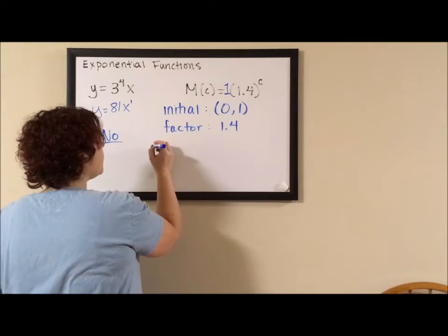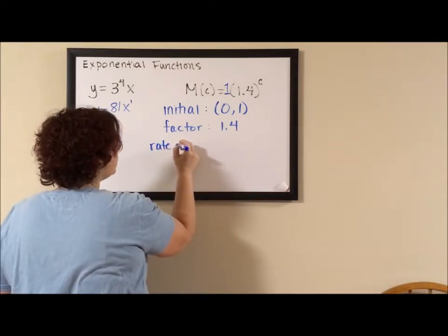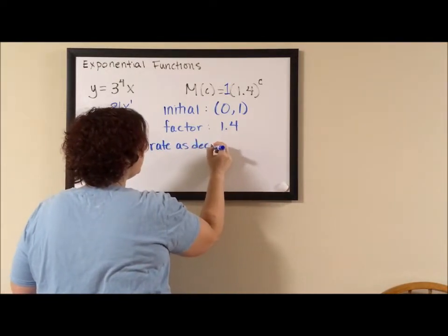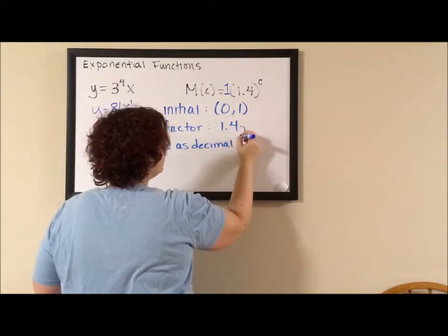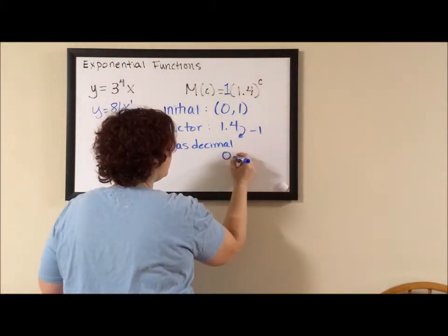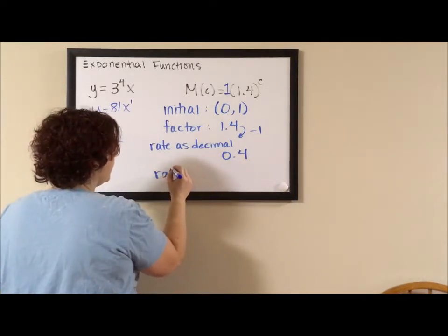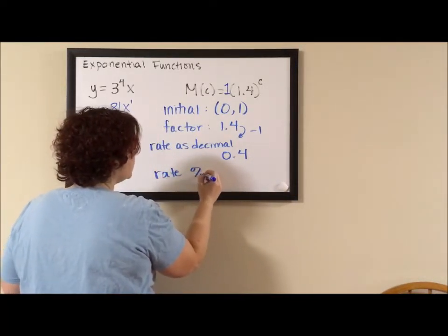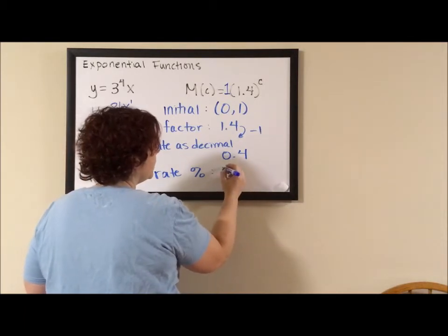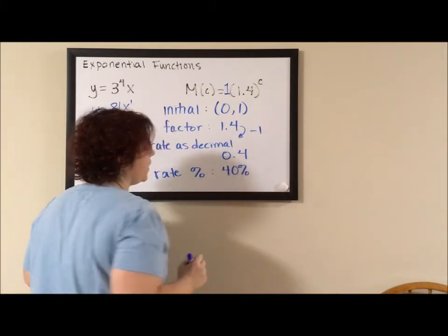So to get the rate as a decimal, we subtract 1. So this becomes 0.4. And then to get the rate as a percent, you multiply by 100. So this has a 40% growth rate.